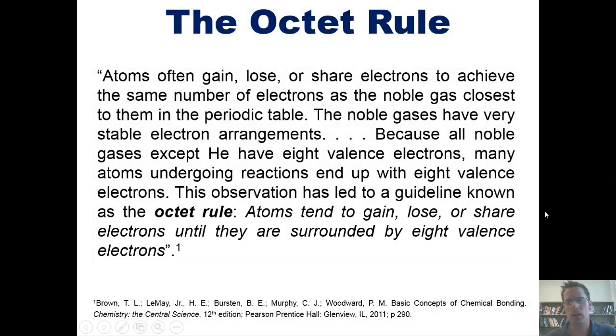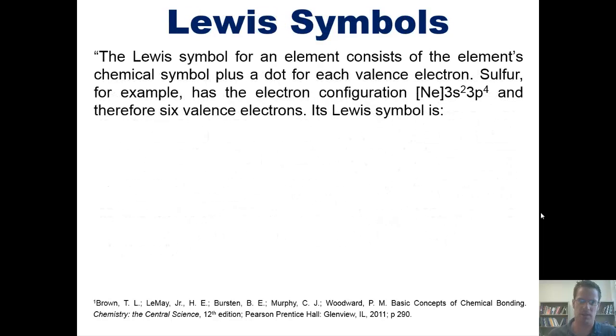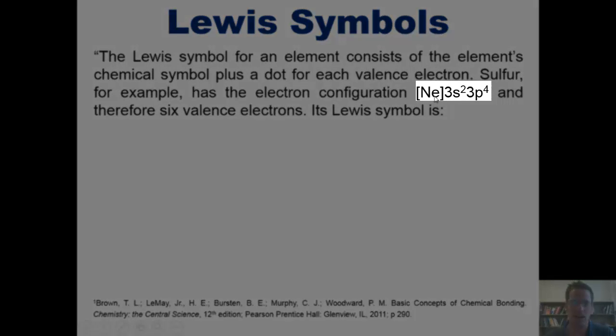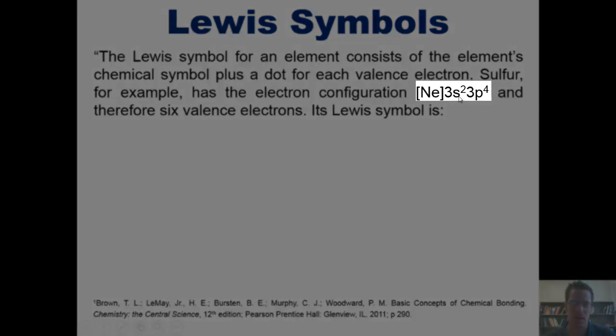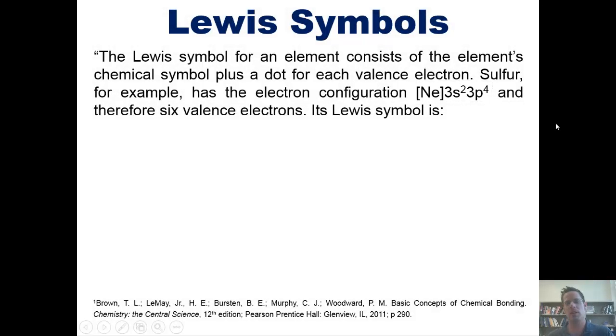Now, with that groundwork laid, I want to introduce you to something called Lewis symbols. The Lewis symbol for an element consists of the element's chemical symbol plus a dot for each valence electron. Sulfur, for example, has the electron configuration of neon, then 3s2, 3p4, and therefore has six valence electrons. Its Lewis symbol, therefore, looks like this, where I've got its atomic symbol S and six valence electrons surrounding it.